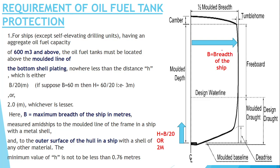So suppose if the moulded breadth of the ship is 60m, in that case H will come to 3m. You can either have H or 2m, whichever is less. So here if the ship's breadth is 60m, it gives 3m, and the second option is 2m — whichever is less, we have to take. Between 3m and 2m, 2m is less, so we will take 2m.